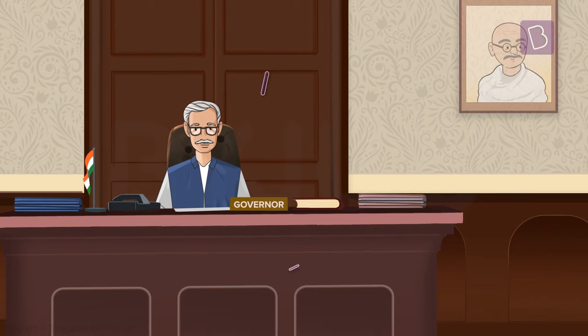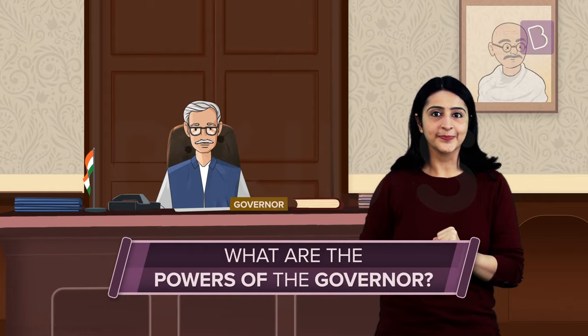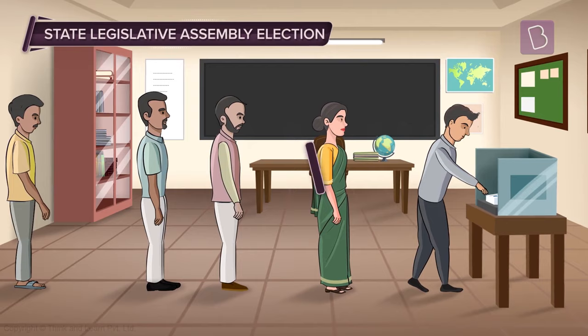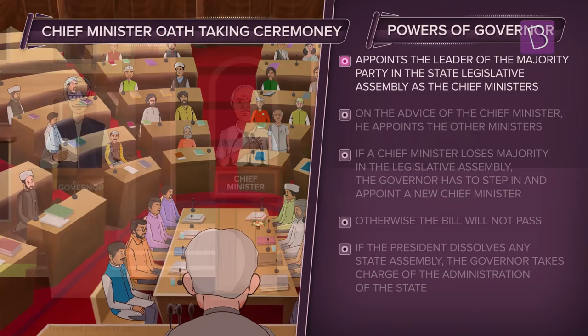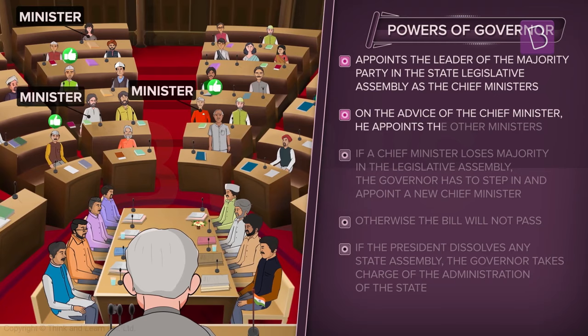What are the powers that the governor of a state has? After every legislative assembly election, the governor appoints the chief minister. Based on the chief minister's advice, the governor appoints the rest of the ministers.